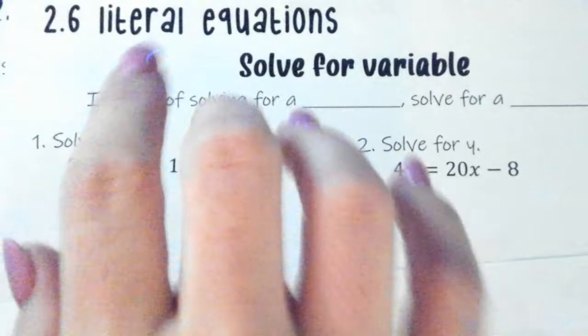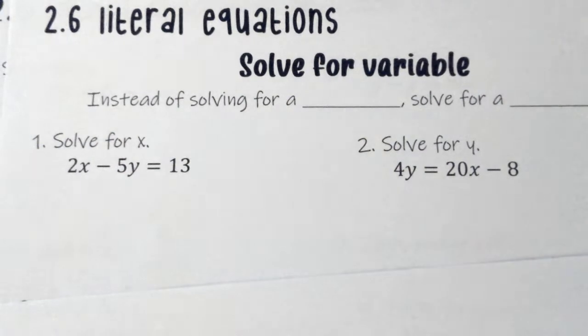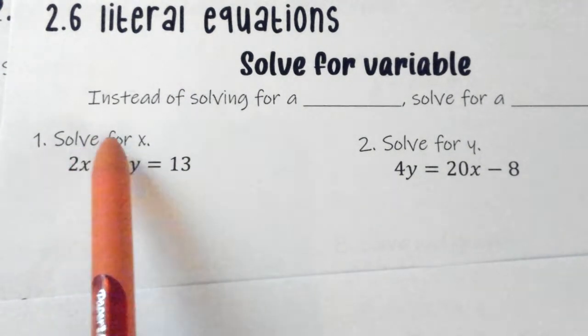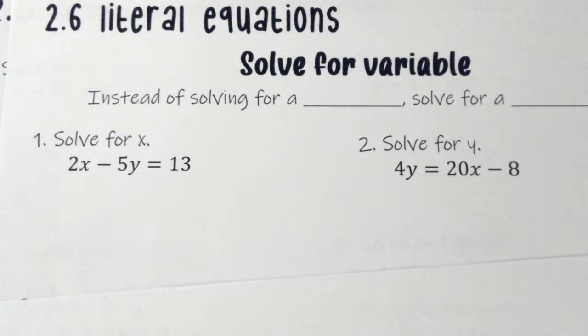Let's look at these literal equations. This time we're going to be solving our equations except for we're solving for a number. Most of these are going to have two variables, two or more variables, and we're just solving for one variable, meaning that our answer is going to contain a variable.